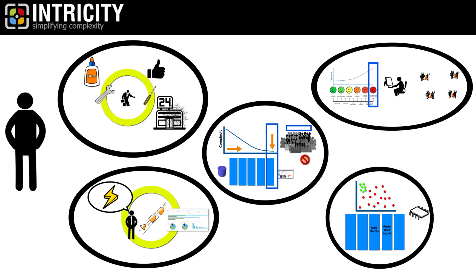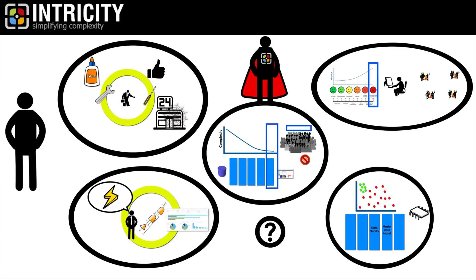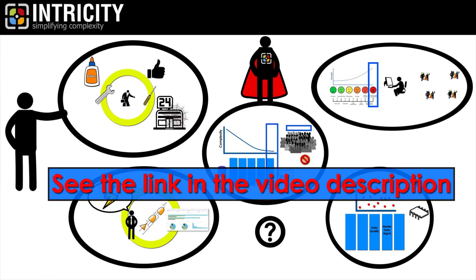So, I've covered five principles to follow when deciding where to put your logic. I'd like to hear some principles that you have followed with success. Share your ideas in the comment section, and if you're working out your data to information landscape, I recommend you reach out to Intricity about our strategic roadmap engagement. I've included a link in the video description that outlines this engagement, and of course, you can always reach out to Intricity to talk with a specialist.